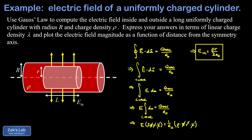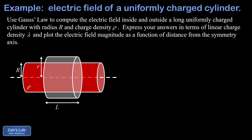Toward the end of the video we'll rephrase this in terms of linear charge density. Next we get the electric field outside the cylinder. We choose a Gaussian cylinder with radius little r that's bigger than the radius of the cylinder big R. The electric field points radially outward in this infinite cylinder approximation, making it perpendicular to the curved part of our Gaussian surface.